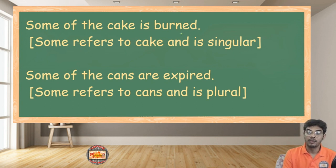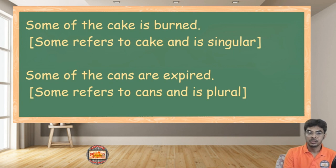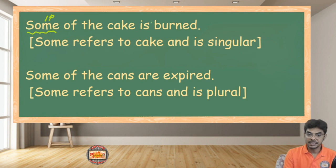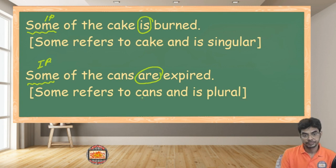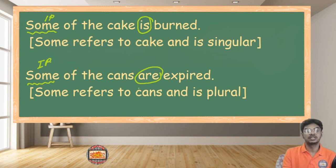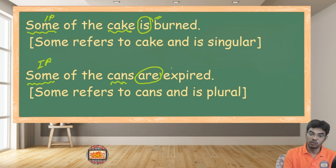Here are two examples: 'Some of the cake is burned' — here 'some' is an indefinite pronoun accepting a singular verb. And 'Some of the cans are expired' — here the same indefinite pronoun 'some' is accepting a plural verb. So: 'Some of the cake is burned' versus 'Some of the cans are expired.' When it's cake, which is singular, we use singular; when it's cans, which is plural, we use plural — and you are pretty right about that.